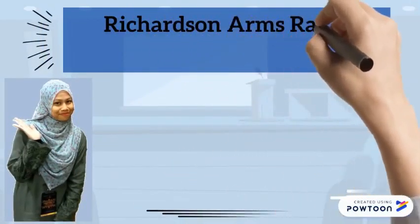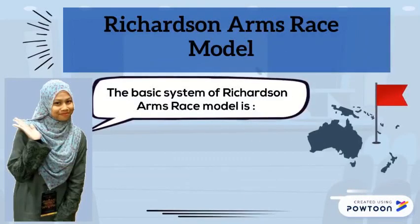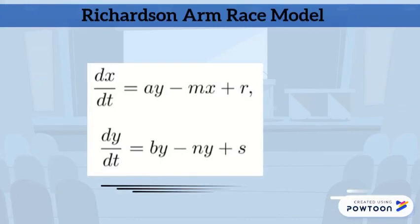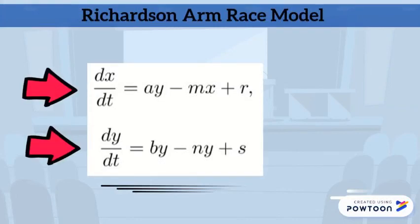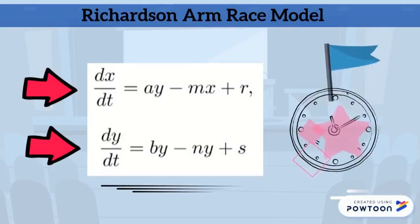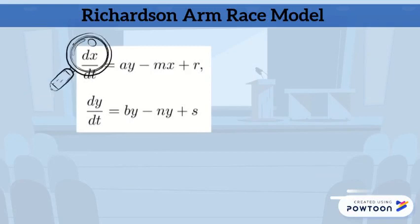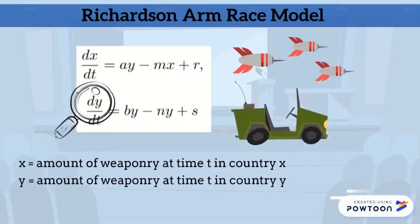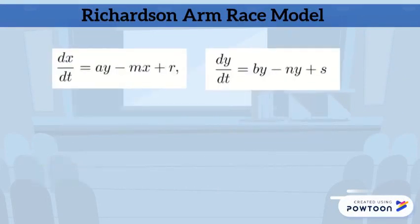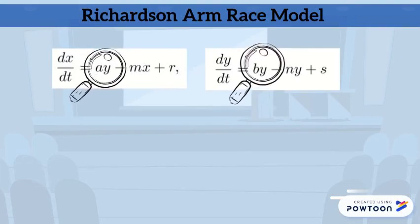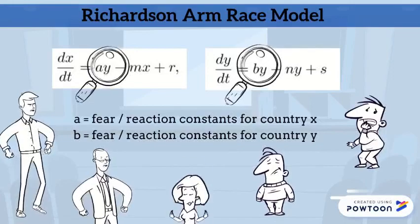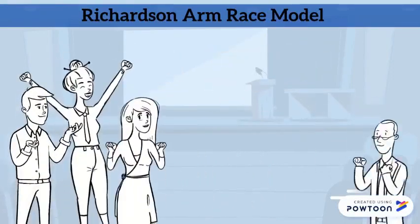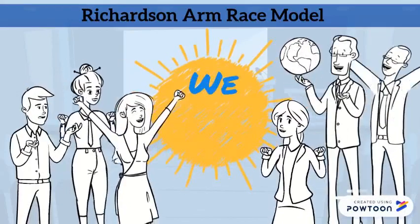The basic system of the Richardson arms race model uses two variables, x and y, each representing a single country at time t. Each differential equation represents the rate of change of arms build-up for a specific country. Here, x represents the amount of weaponry that country 1 has at time t, and y is the same for the second country. The constants a and b are known alternatively as fear or reaction constants. They represent the desire of a country to increase arms at a rate proportional to the number of arms that their opponent possesses.